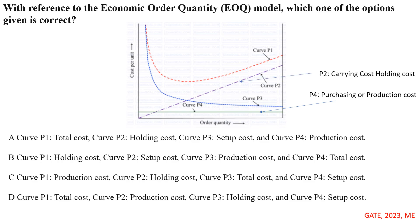Carrying cost or holding cost varies proportionally with order quantity. So here, curve P2 is the carrying or holding cost.